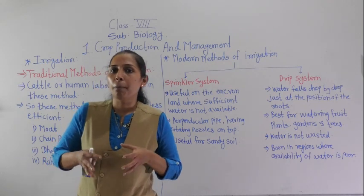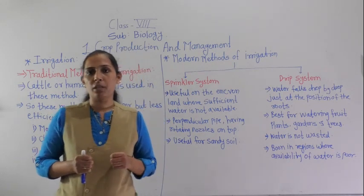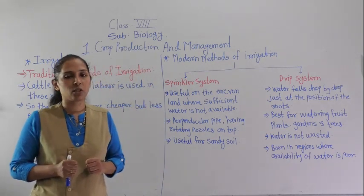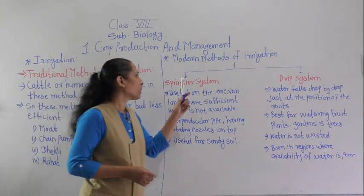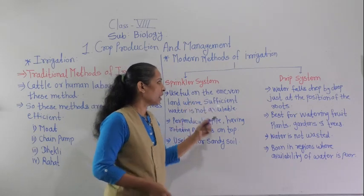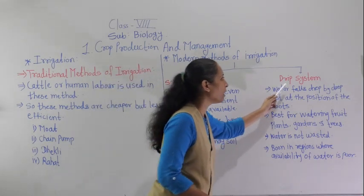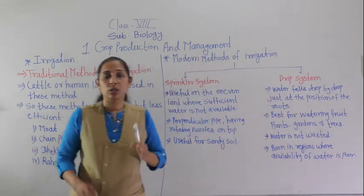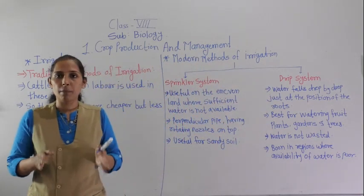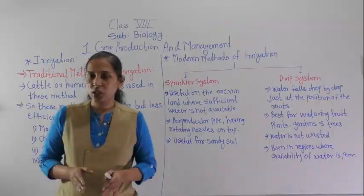So these are the two main modern methods of irrigation: the sprinkler system and the drip system. This is all about irrigation.